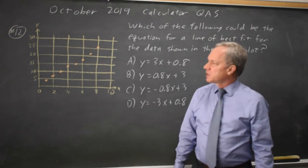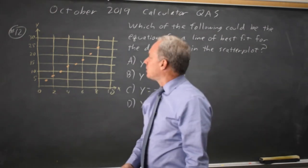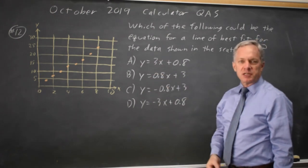This is question 12. The College Board is asking for the line of best fit for the points on this graph. And we have four choices, two with positive slopes and two with negative slopes.